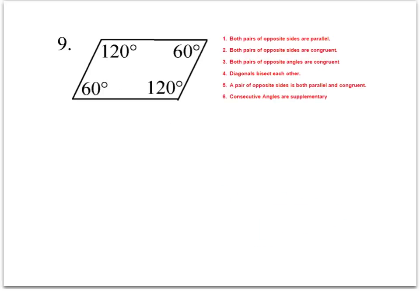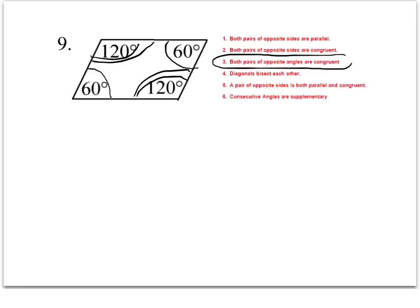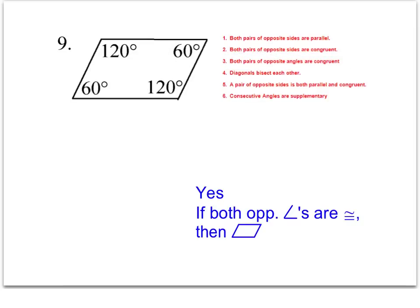Number nine gives us information about opposite angles. We have two sets of opposite angles that are congruent, and that matches test number three. So yes, this is a parallelogram: if both pairs of opposite angles are congruent, then it is a parallelogram.